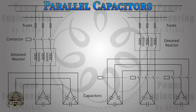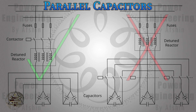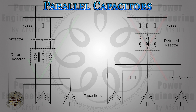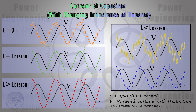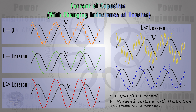For each capacitor connected to a harmonic network, a separate reactor should be used. The only instance where multiple capacitors can be connected to a single reactor is when the capacitors are switched in and out of the circuit simultaneously, based on the current curve shown in the image.